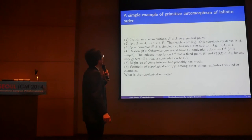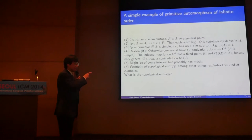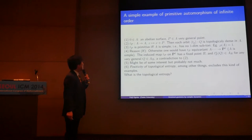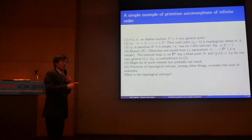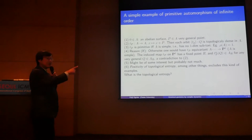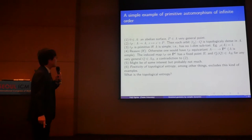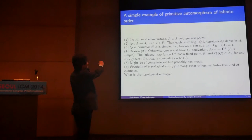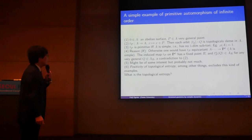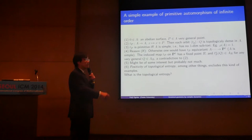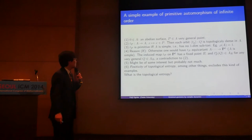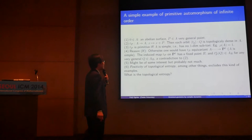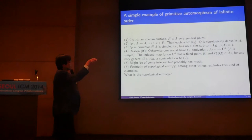What kind of automorphisms are primitive and of infinite order? Maybe the simplest example: consider an abelian surface and take a very general point, and this is the translation by that very general point. Then each orbit is topologically dense in the abelian surface, and this automorphism is primitive if and only if the abelian surface is simple. The 'if' direction: otherwise, because of non-simpleness, we have an equivariant rational map where the base space is necessarily P1. The induced action on P1 always has a fixed point, and considering the fiber over that fixed point, iterates remain in the fiber — a contradiction.